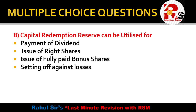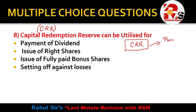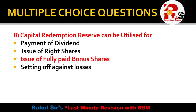Question 8 is from the chapter of Redemption of Preferences. There is a concept called CRR — Capital Redemption Reserve (not Cash Reserve Ratio from economics). CRR can be used for: payment of dividend, issue of right shares, issue of fully paid bonus shares, or setting off against losses. CRR will be utilized for issue of fully paid bonus shares — that is the right answer.